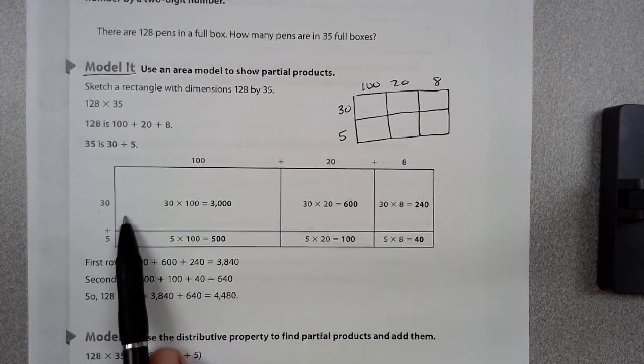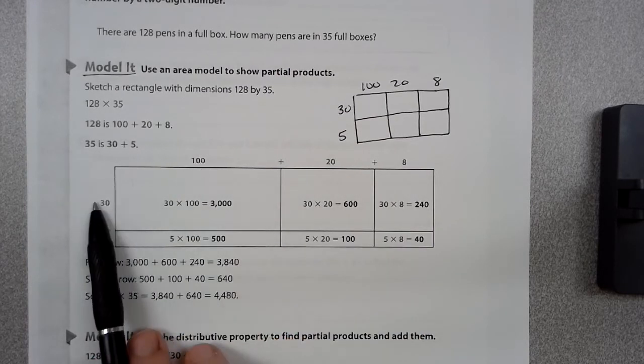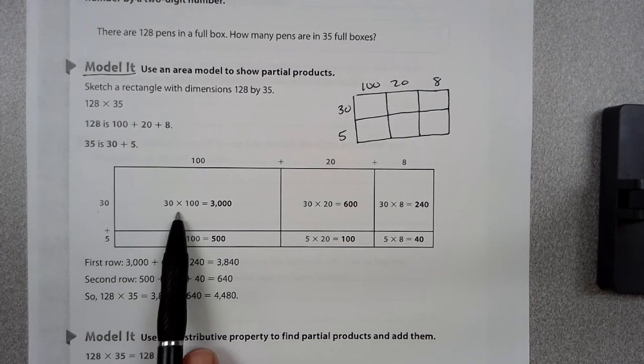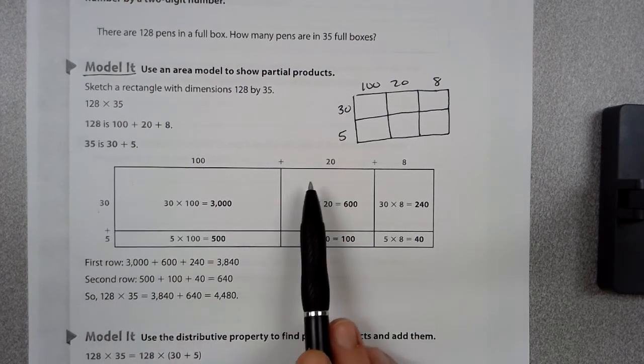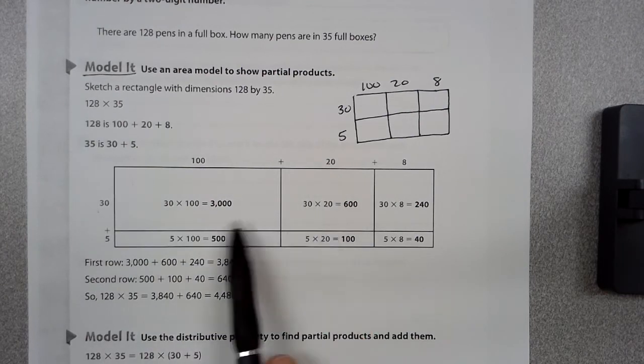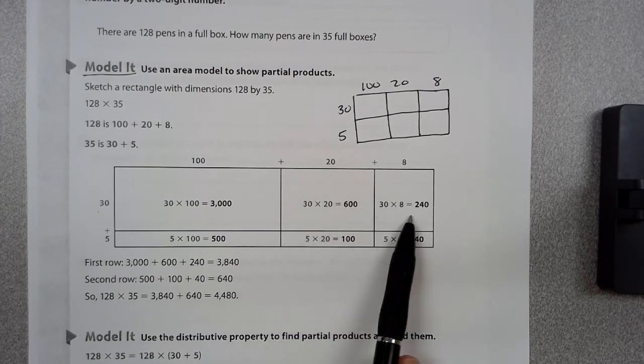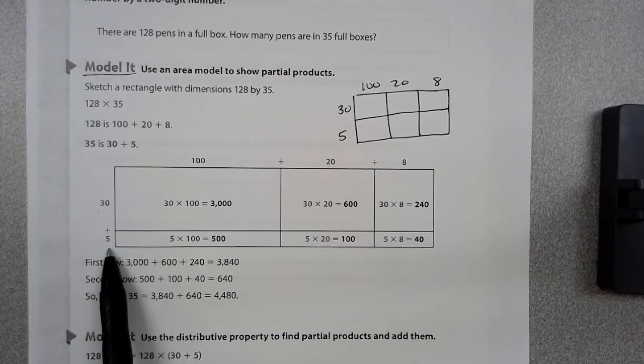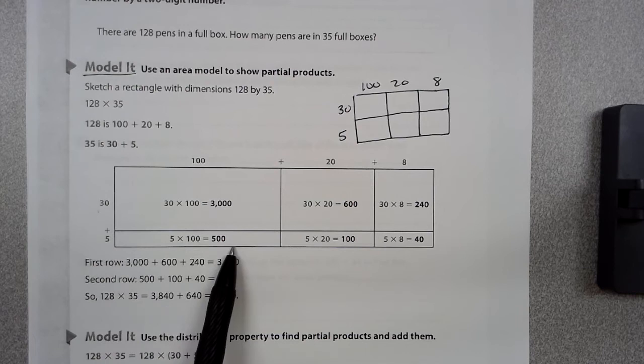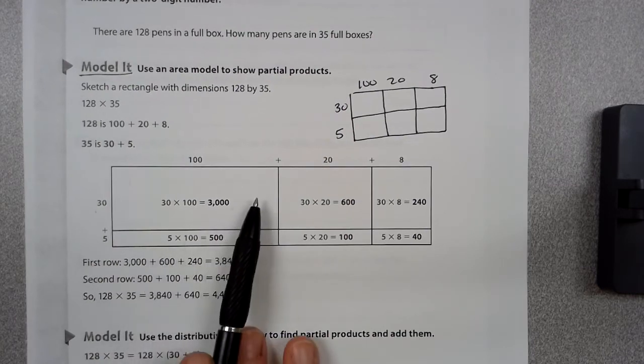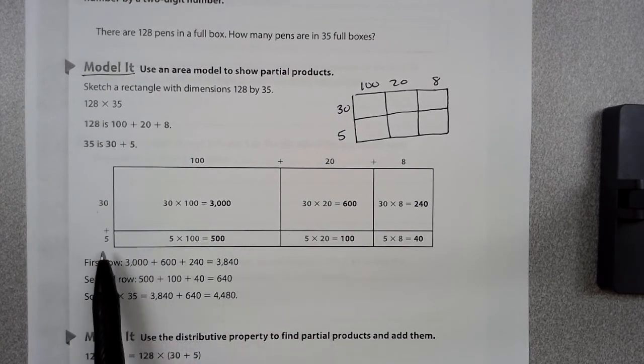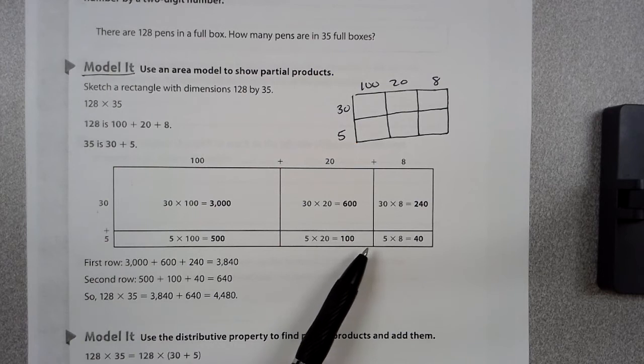Then you fill in your spaces, and then you just multiply. 30 times 100 is 3,000. 30 times 20 is 600. 30 times 8 is 240. Then we go down here. 5 times 100 is 500. 5 times 20 is 100. And then 5 times 8 is 40.